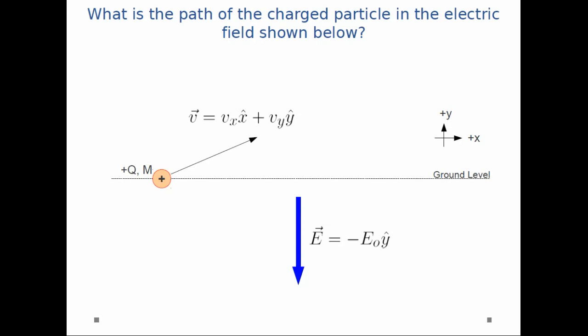And I apply an electric field downwards given by minus e-naught in the y-hat. E-naught is a positive constant. And I ask what is the path of the charged particle in the electric field shown below?